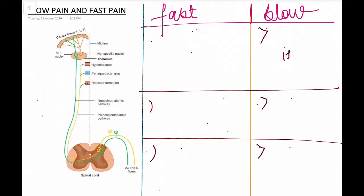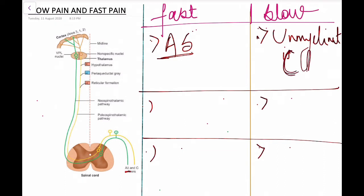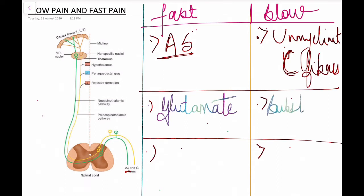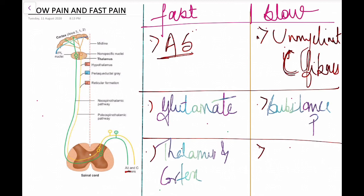Fast pain is conducted by A-delta fibers, while slow pain is conducted by unmyelinated C-fibers. In the fast pain pathway the neurotransmitter involved is glutamate; in the slow pain pathway it is substance P. Both pathways project to the cortex at area 3-1-2, but the fast pain pathway projects only to the thalamus and cortex, whereas the slow pain pathway projects to the non-specific nuclei of the thalamus, hypothalamus, periaqueductal grey nucleus, and reticular formation.